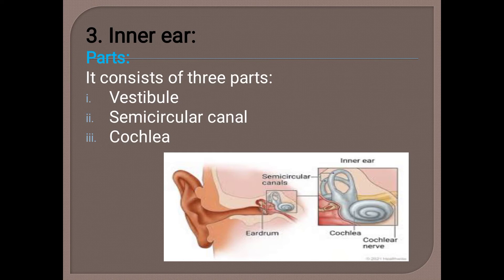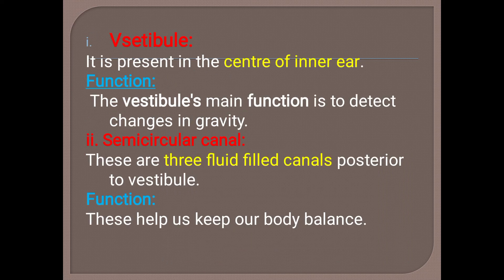Then comes the inner ear. Like the outer ear and middle ear, it also has three parts: the vestibule, the semicircular canals, and the cochlea. The vestibule is present in the center of the inner ear, and its function is to detect changes in gravity. The semicircular canals are three fluid-filled canals present posterior to the vestibule, and their function is to help keep our body in balance.